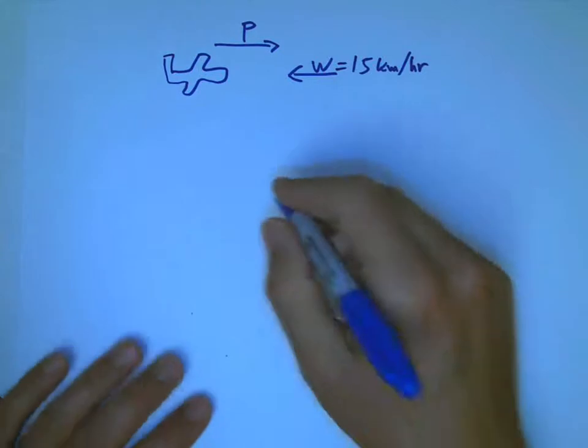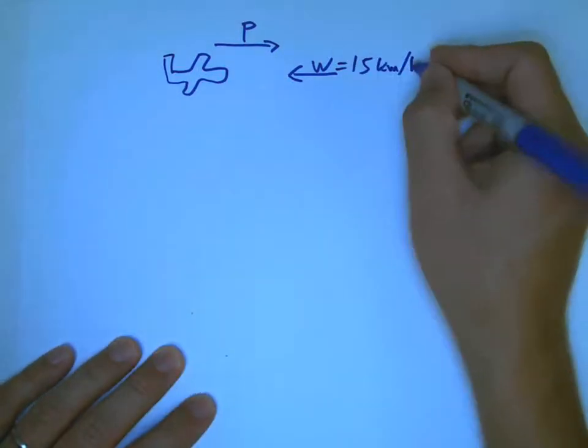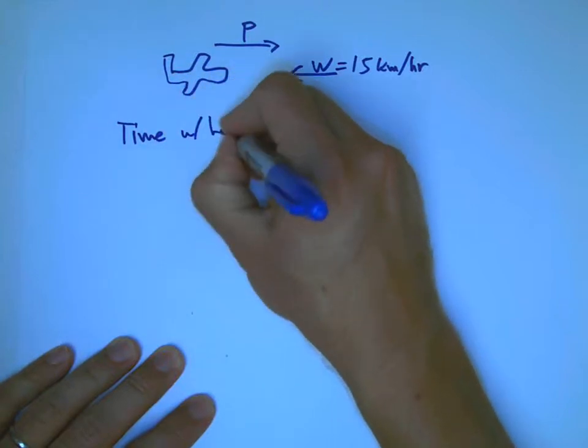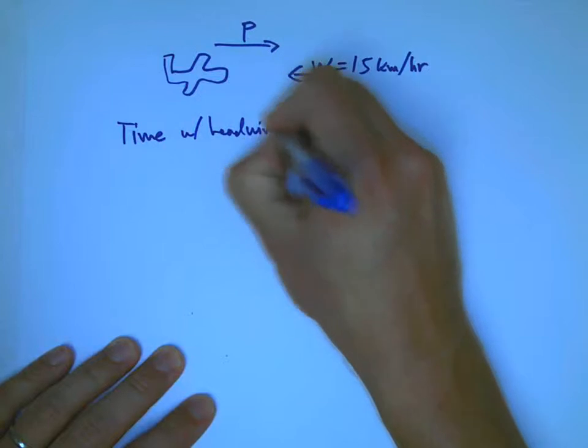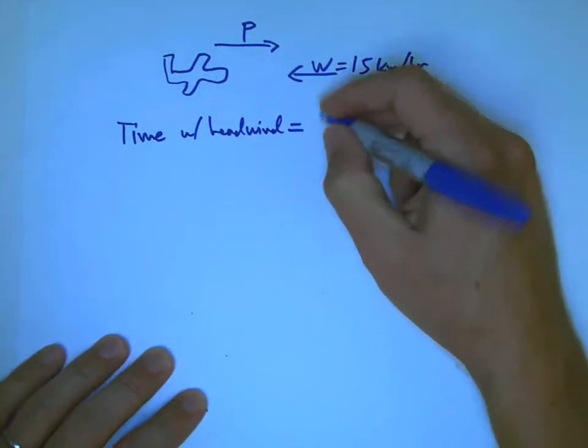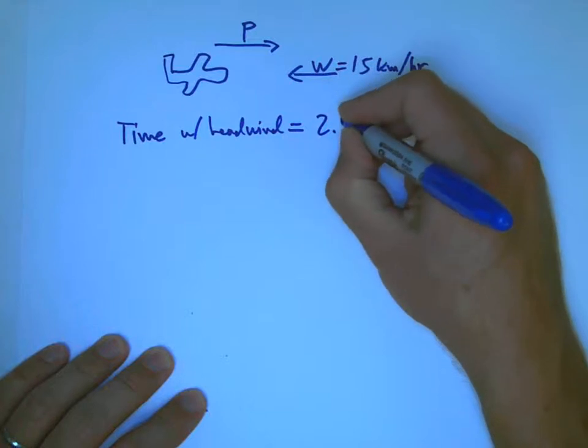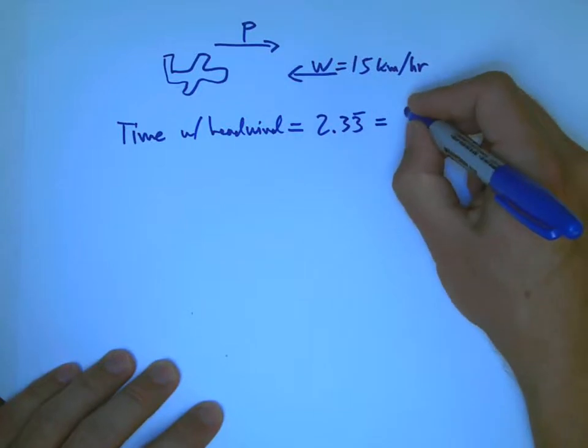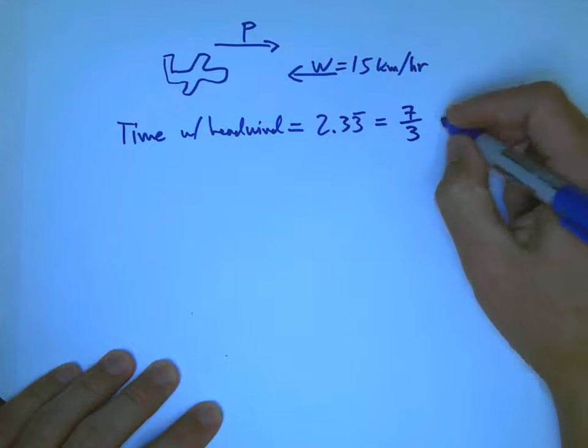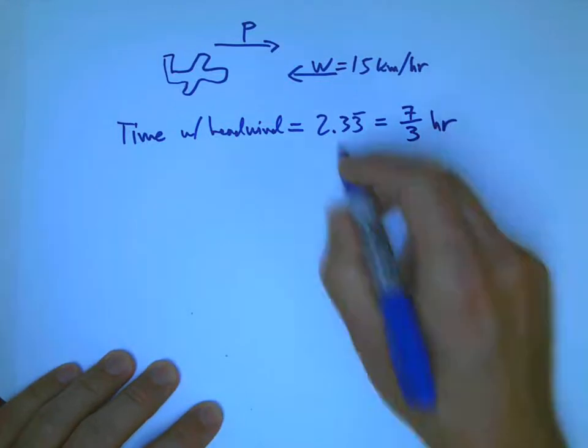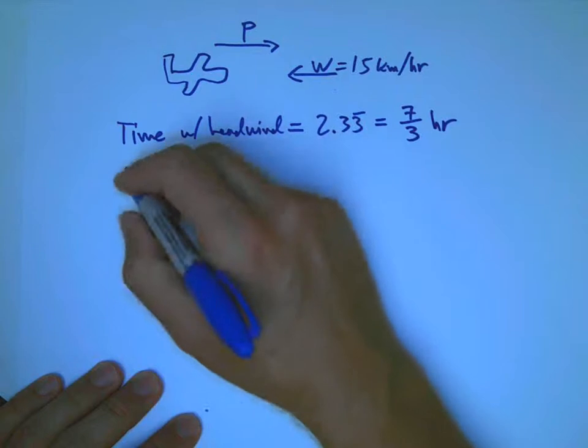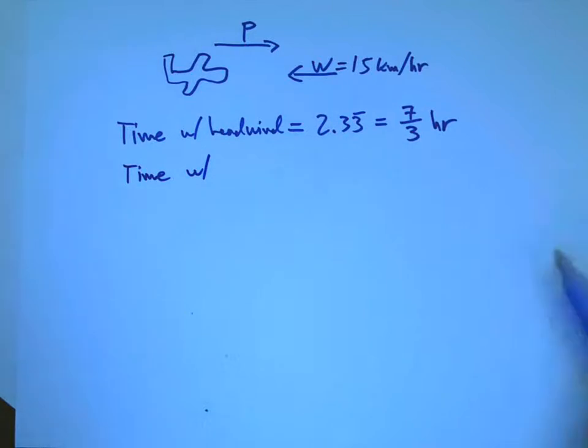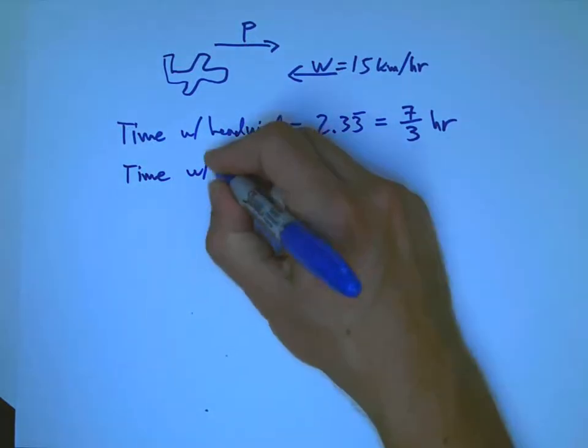And what does it say? It says that the headwind is 15 kilometers per hour, and the time with the headwind equals 2 hours and 20 minutes. Really good idea to convert that to just hours. And if you really want to do it nicely, you convert it to a fraction, 7 thirds of an hour. Decimal's not such a bad idea, but fractions are kind of more elegant.